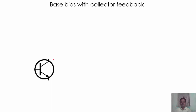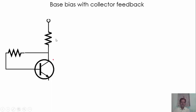Let us draw the circuit diagram for the collector feedback bias. This is the NPN transistor — this is the emitter, base, and collector. Now we connect one resistance to the collector, and another resistance which is connected to the base. The emitter is connected to the ground, and this is VCC, that is the power supply.